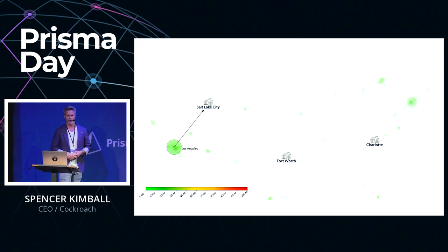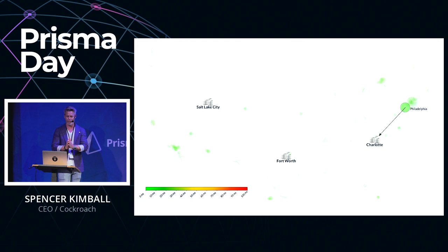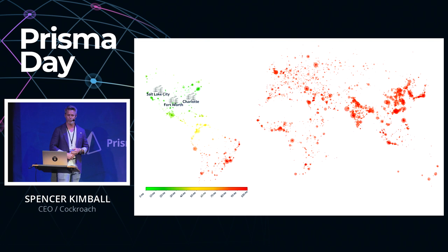The same applies to Omaha, Nebraska as a central user — their data is led by the replication site in Fort Worth — and similarly Philadelphia and Charlotte on the East Coast. But when you zoom out, things look pretty grim for the rest of the world. So how do you really build a global service?